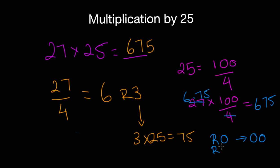Remainder 1, it's going to be 25. Remainder 2, the last two digits are going to be 50. Remainder 3, your last two digits are going to be 75.